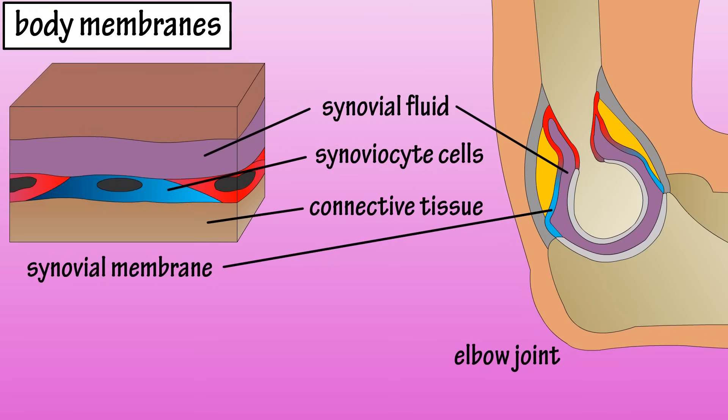Synovial membranes line some of the joints in the body. They are composed of connective tissue with a thin layer of synoviocyte cells. The cells secrete synovial fluid that fills the joint cavity, which helps to reduce friction. And that covers the basics on the body membranes.